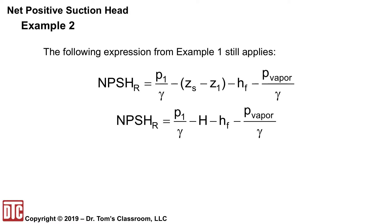So we can solve for P1 over gamma. So we have our required plus H plus HF plus P vapor. So it's got to account for all of those terms.